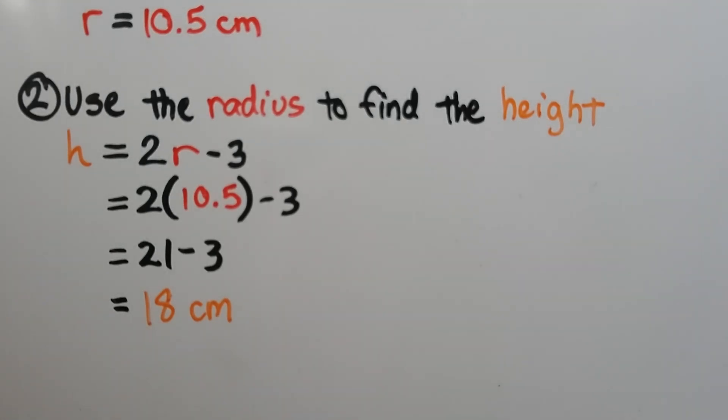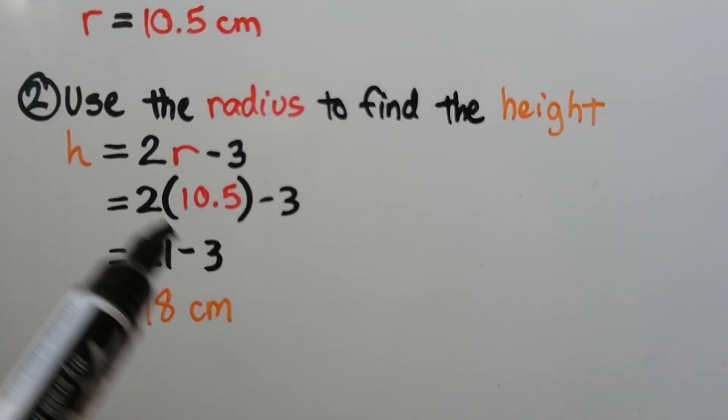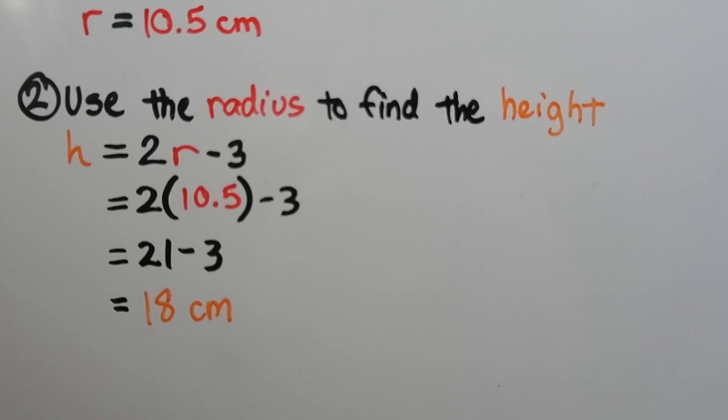The second thing we do is use the radius to find the height. So our height was equal to 2 times the radius minus 3. We do 2 times 10.5, subtract the 3, and we get 18 centimeters for our height.